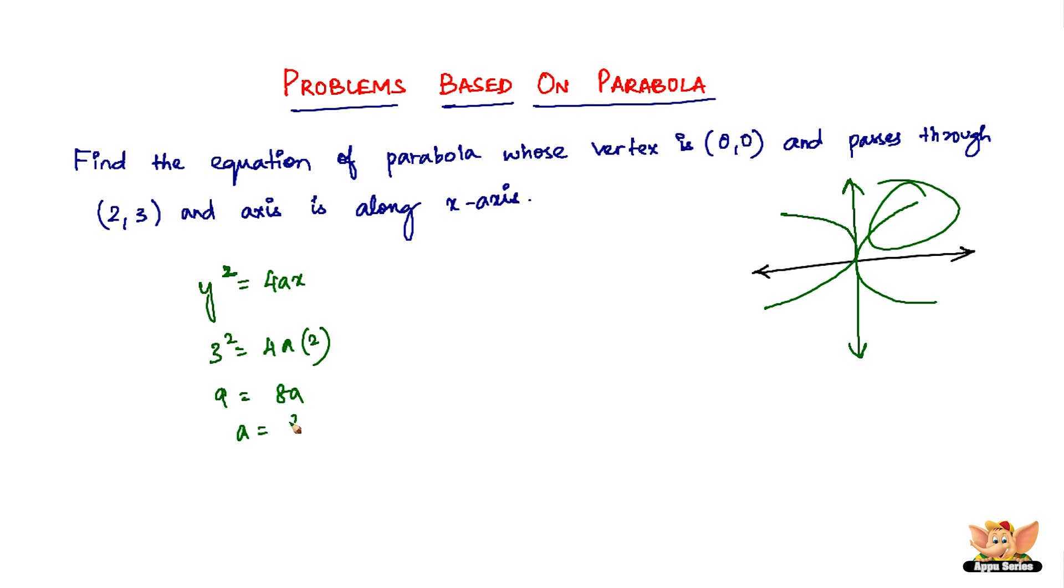Now that we found a, we just have to substitute back in this equation. So y² = 4 times 9/8 times x. 4 goes 2 times in 8, and we have y² = 9/2 x, or 2y² = 9x.